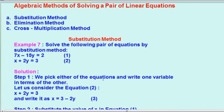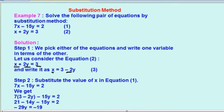We pick either of the equations and write one variable in terms of the other. इन में से कोई भी एक equation ले लेंगे और उसमें एक value को find out कर लेंगे. हम यहाँ पर choose करते हैं equation two: x plus 2y equals to 3. 2y को RHS में ले लेंगे, LHS से RHS को shift करेंगे. तो x equals to 3 minus 2y. यह हो गया हमारा equation three.